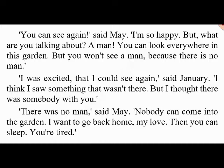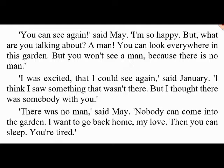Then May ran to speak to January. 'What is it, my love?' 'I can see now — I was so happy I wanted to tell you, and then I saw you with a man.' 'You can see again!' said May. 'I'm so happy — but what are you talking about? A man? You can look everywhere in this garden but you won't see a man, because there is no man.' 'I was so excited that I could see again,' said January. 'I think I saw something that wasn't there.' And here my story ends, said the merchant. January was happy — he could see again. But there was something January couldn't see: that May didn't love him and loved Damien. January wasn't blind anymore, but love is always blind.